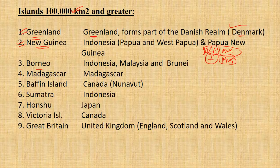The third island is Borneo. Borneo belongs to three countries — remember the acronym MBI: Malaysia, Brunei, and Indonesia.